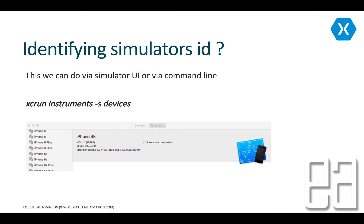So how do you identify a simulator ID? This can be done using the simulator's UI or via the command line. The command line option is xcrun instruments -s devices, which will list all the devices available within your Mac operating system. You can also do it via the UI, where you can see something called an identifier — which is exactly the same identifier you get from the command line.